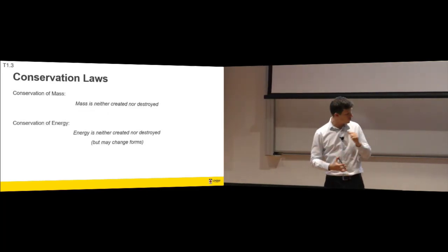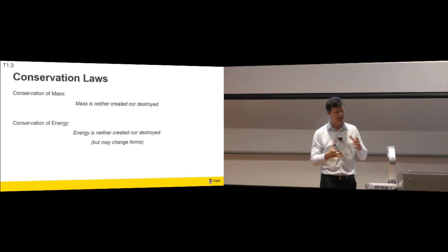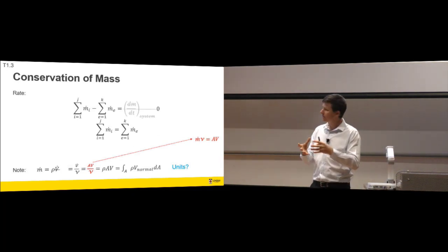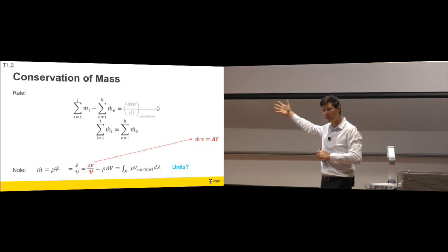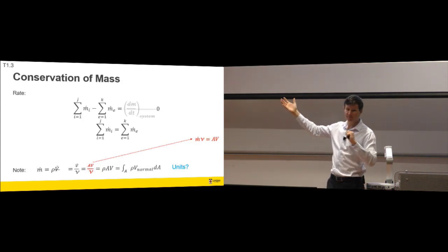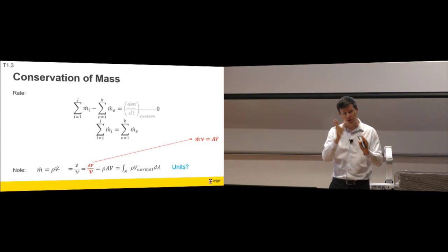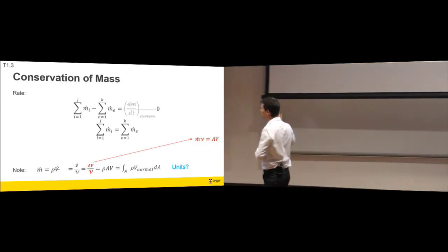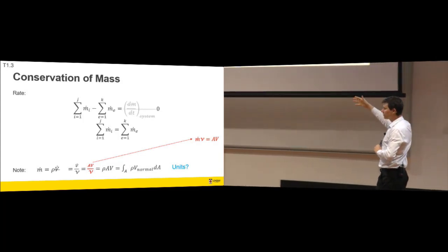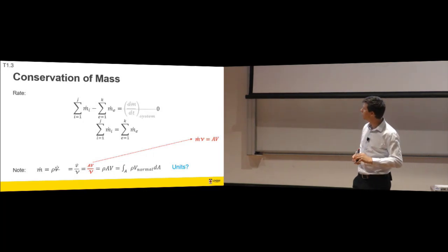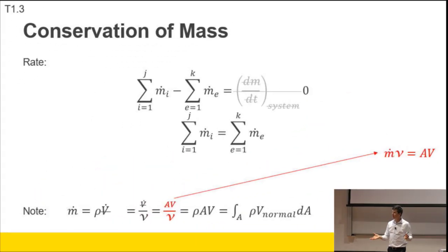Conservation of mass and energy in a steady-state, steady-flow environment. For conservation of mass: mass in minus mass out equals change of mass in the system over time. If there's no change, mass in equals mass out — summed over all inlets and outlets. Mass flow rate can be expressed as: density times volumetric flow rate; volumetric flow rate divided by specific volume; or area times velocity. We'll use that last relationship later.